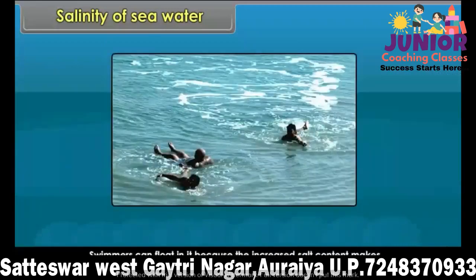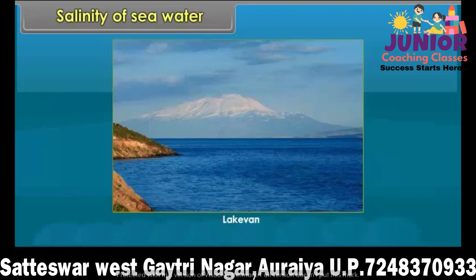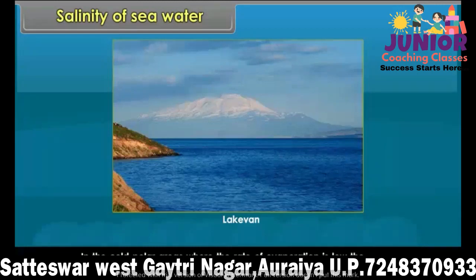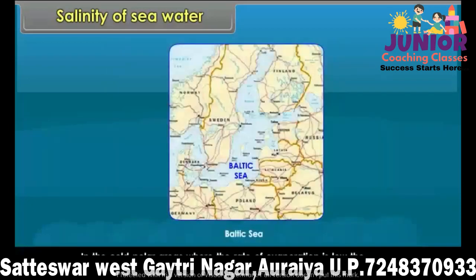Swimmers can float in the Dead Sea because the increased salt content makes it dense. The highest amount of salinity is found in Lake Van in Asia Minor. In cold polar areas where the rate of evaporation is low, the salinity is also very low — for example, the Baltic Sea.